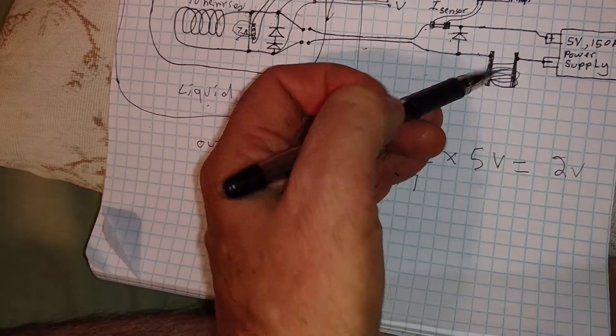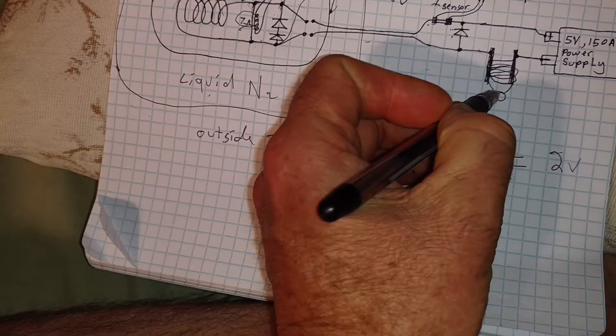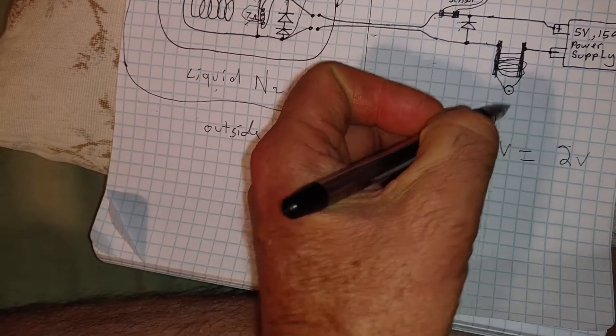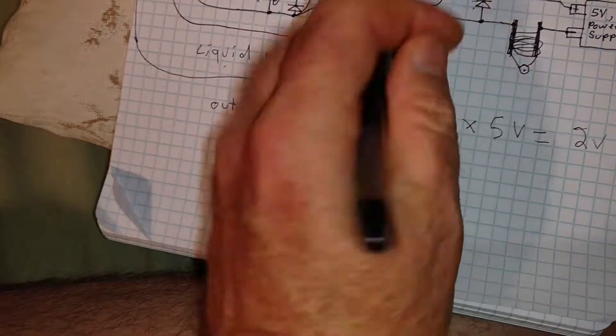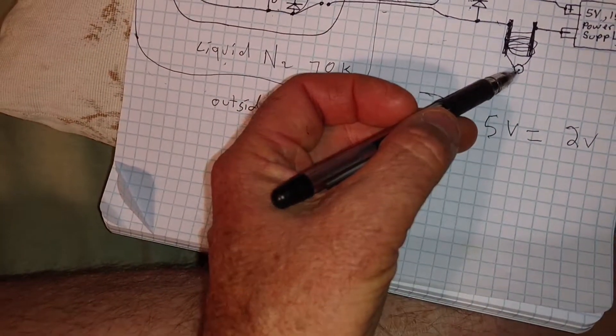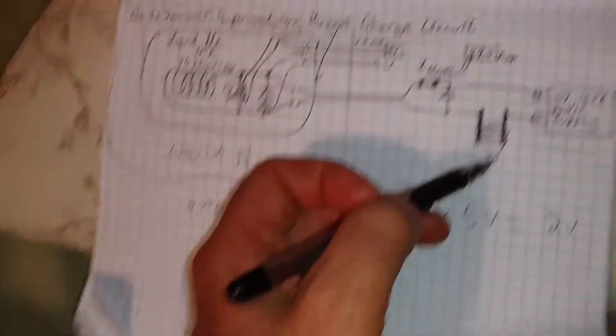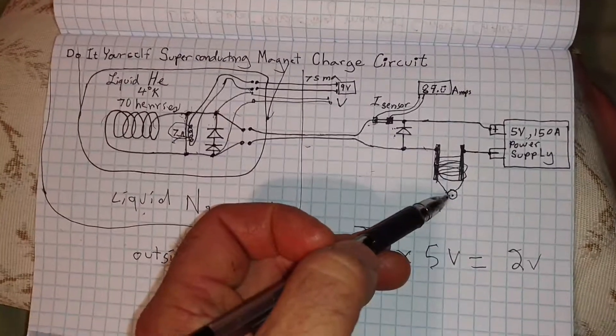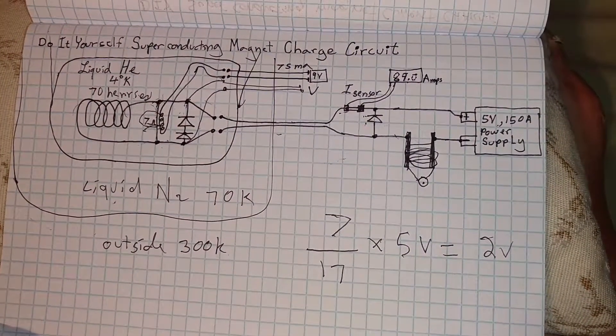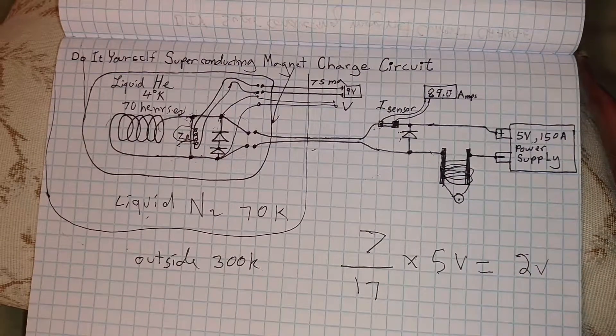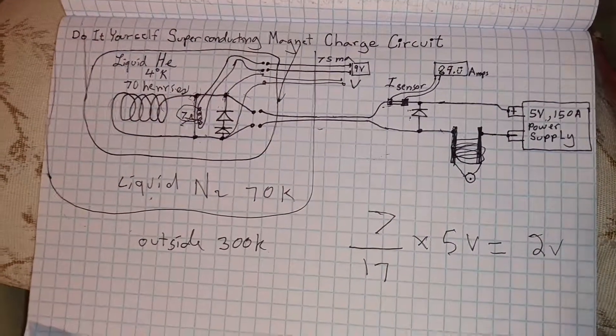It might take some doing. You might have to add a single rotary turn power resistor to help tune in that final amount of current. Well, there you go, some attempt at explaining a homemade superconducting magnet charge up circuit. Thank you for listening.